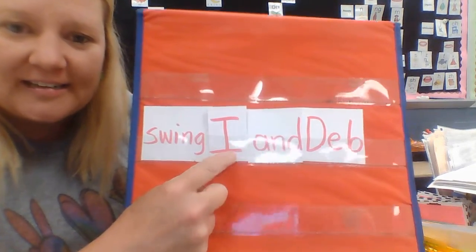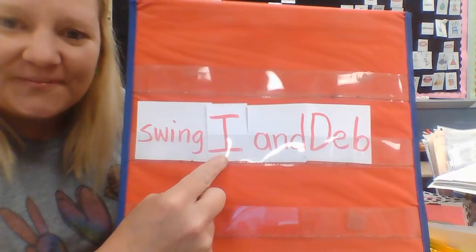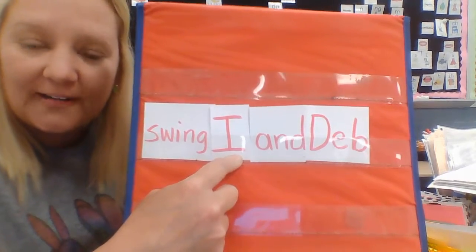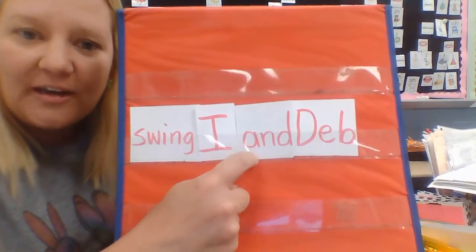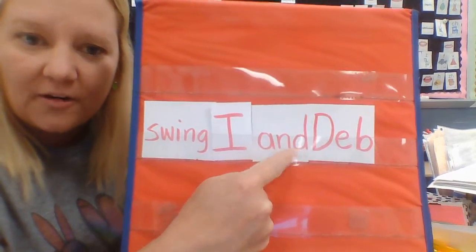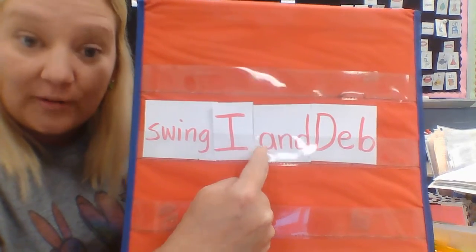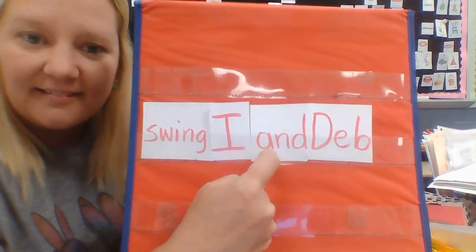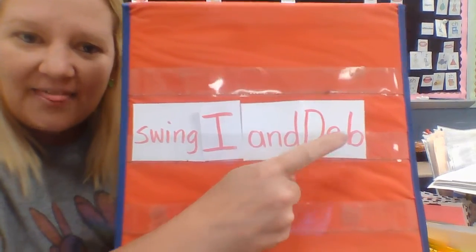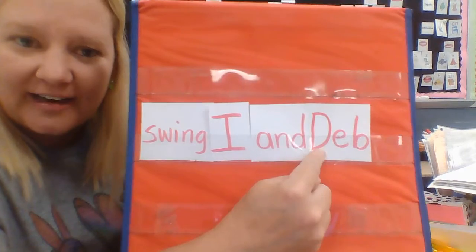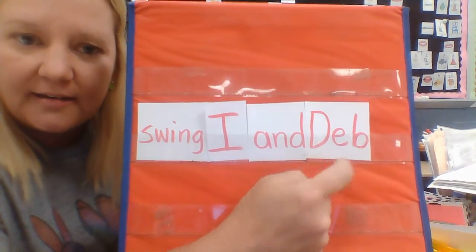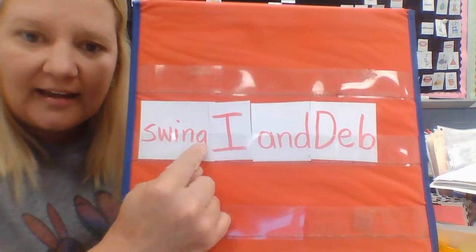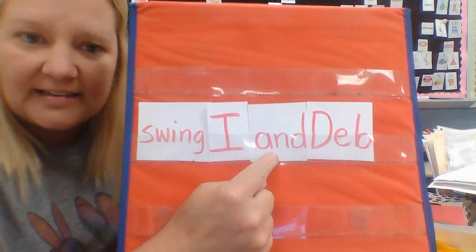We know this word is I. We know it's a letter, but when it looks like this and it's all by itself, we know that it is a word — I. And we know this word; it's a tricky sight word. If you don't know it, we might be able to sound this one out: and. And then I have another word — let's sound it out: D-E-B. Deb.